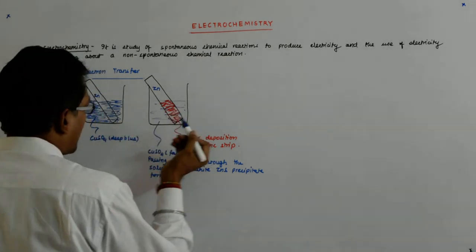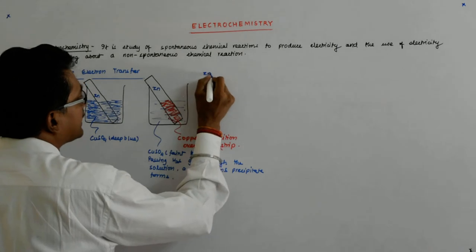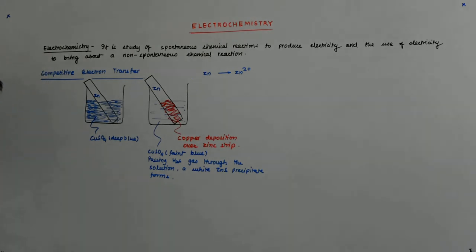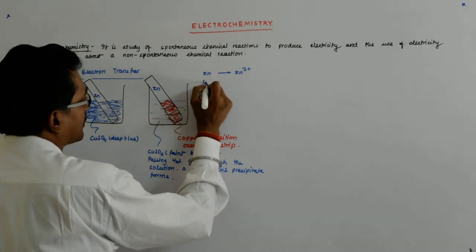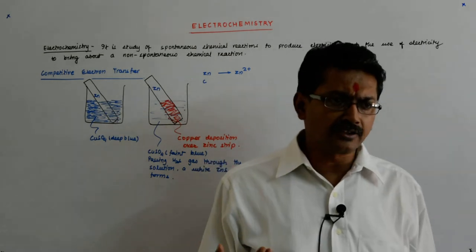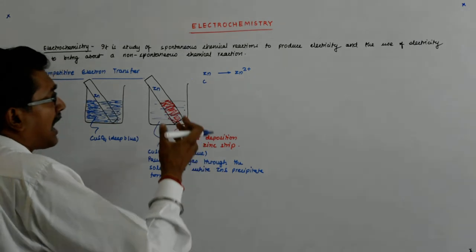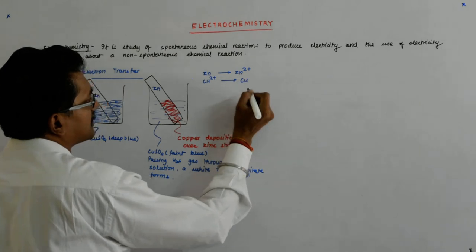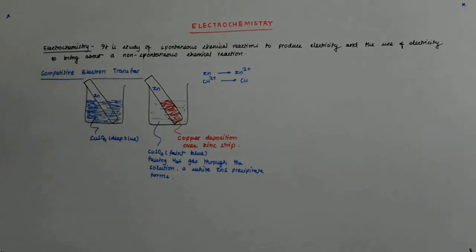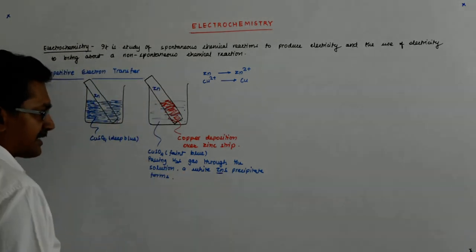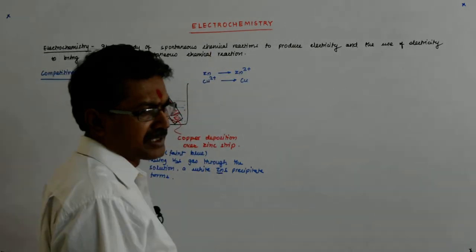Since zinc has come into the solution, it seems that Zn has become Zn²⁺. And since copper metal has deposited on the strip, the Cu²⁺ that was in solution has become copper metal. The white ZnS precipitate confirms there is Zn²⁺ in the solution.